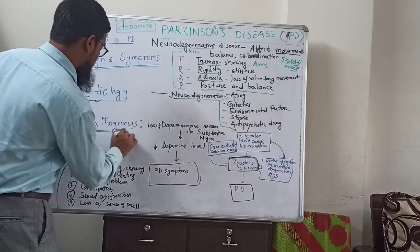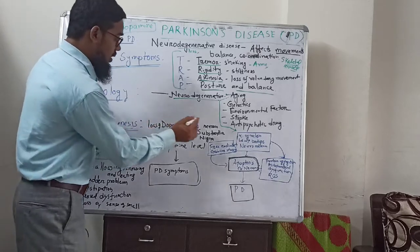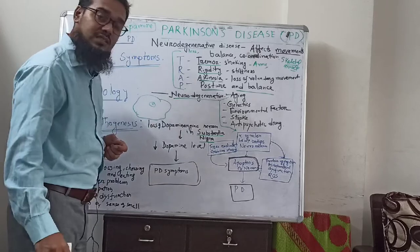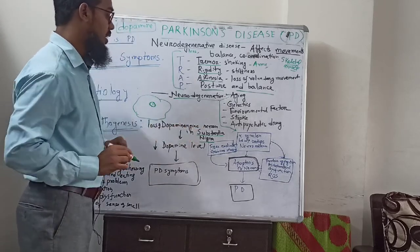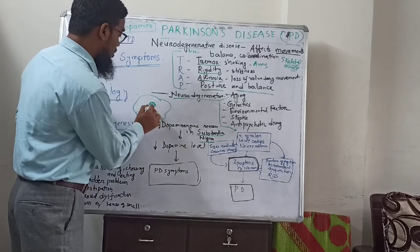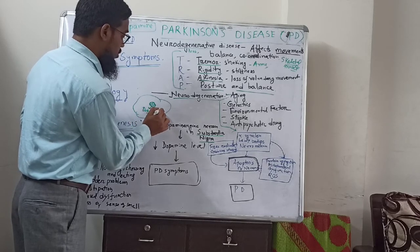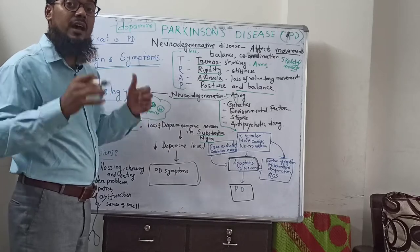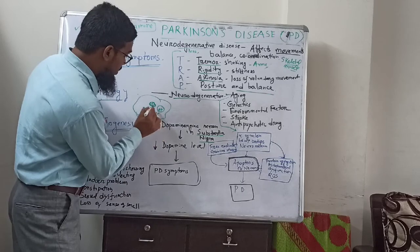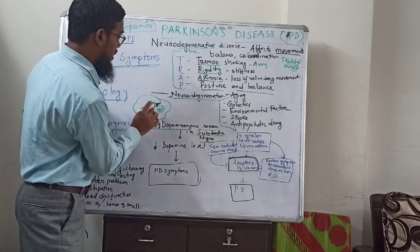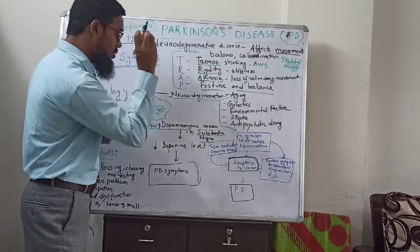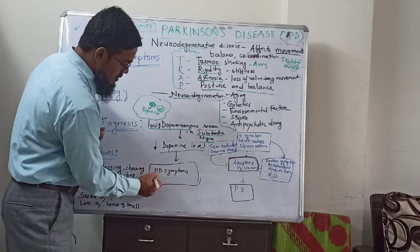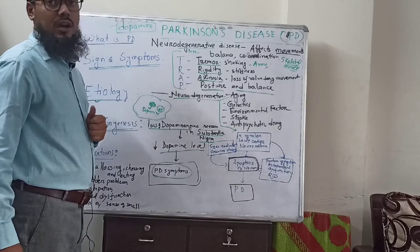How does this occur? That is called pathogenesis. In the brain, one particular area called the substantia nigra contains neurons responsible for production of dopamine. This neurotransmitter dopamine maintains movement, balance and coordination of our skeletal muscle. What happens is that loss of dopaminergic neurons occurs in substantia nigra, and due to this loss, dopamine levels decrease. Due to decreased dopamine production, Parkinson's disease symptoms — tremor, rigidity, akinesia, and posture imbalance — all occur.